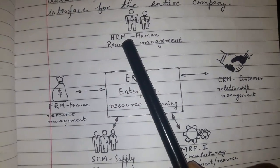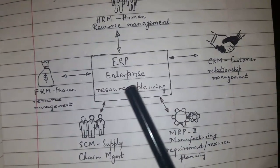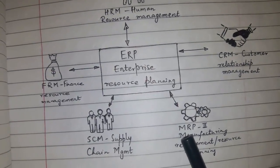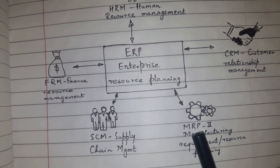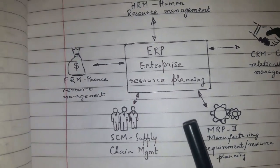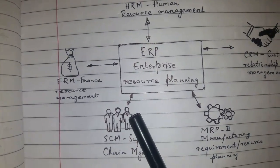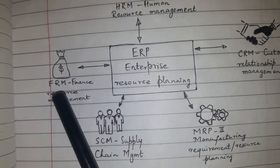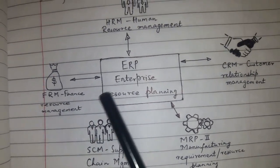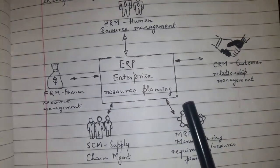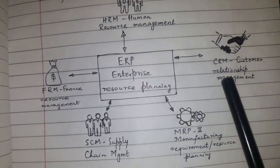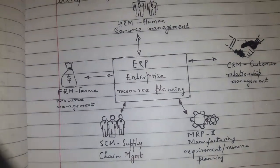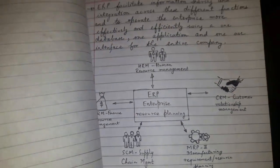The diagrammatic representation of ERP shows it connected to HRM (Human Resource Management), CRM (Customer Relationship Management), MRP2 (Manufacturing Requirement Planning), SCM (Supply Chain Management), and FRM (Finance Resource Management). So ERP enterprise resource planning has connections with all these departments and functions.